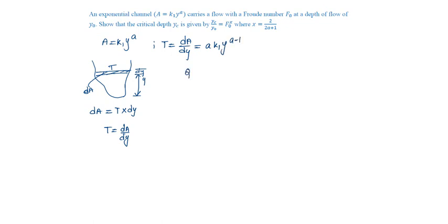We know that at critical condition, q square by g equal to A cube by T, which is equal to k1 cube yc to the power of 3a by Ak1 into yc to the power of a minus 1.